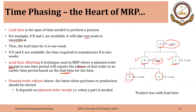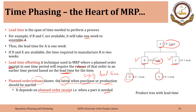Planned order release shows the latest when purchase or production should be started. It depends upon planned order receipt — that is when the part is needed. This is important: this is the latest when the order should be released. If you are considering safety lead time, then you can place the order a little earlier to make sure it will arrive on time. Planned order release is when you are releasing the order of a certain quantity — purchase order or production order — and planned order receipt is when you expect to receive that quantity.